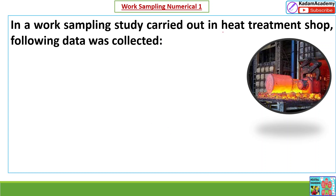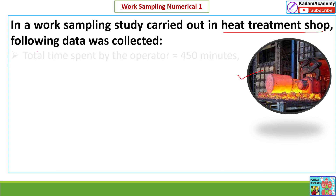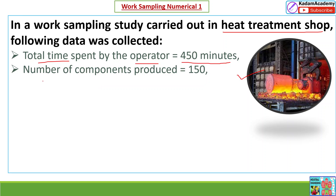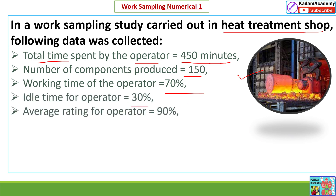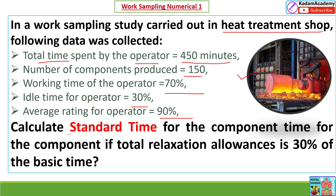In a work sampling study carried out in a heat treatment shop — you can see the shop in the picture — the following data was collected: total time spent by the operator is 450 minutes, total number of components produced is 150, working time of the operator is 70%, idle time is 30%, and the average rating for the operator is 90%. We need to calculate the standard time for a component if the relaxation allowance is 30%.